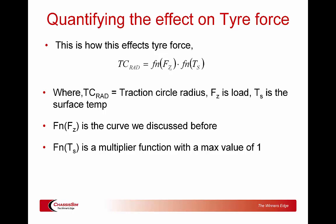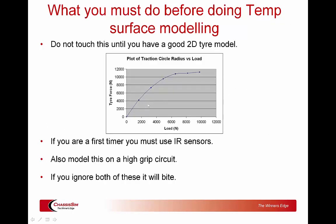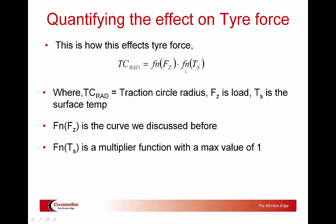Quantifying the effect on tyre force: when we take surface temp into account, the traction circle radius is a function of load times a function of surface temp. That function of load is from our plot of tyre force versus vertical load. For completeness, you'd also include a function of tyre pressure and tyre wear, but to keep the discussion simple I'm limiting it for now. Our surface temperature function is a normalised function that goes between 0 and 1, with a max value of 1, so we can see where the surface temp has its maximum effect.